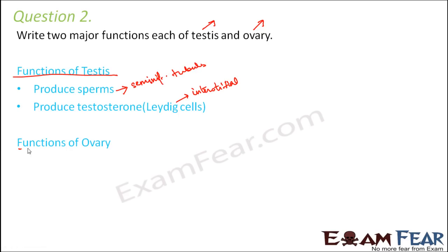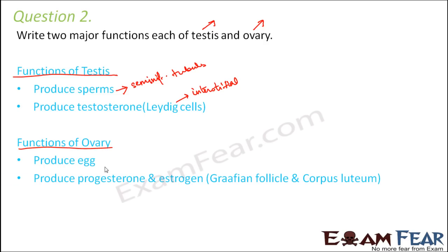Similarly, the functions of the ovary are to produce eggs and to produce hormones like progesterone and estrogen. Progesterone is specifically produced by the corpus luteum after ovulation, and estrogen is also produced by the ovary. These hormones — testosterone, progesterone, and estrogen — regulate secondary sexual characters in both males and females, such as development of breasts and appearance of hair in the genital area.